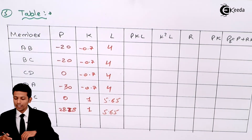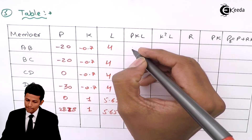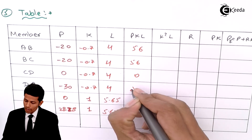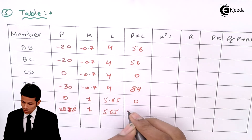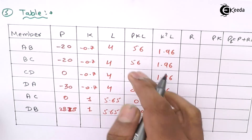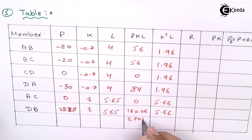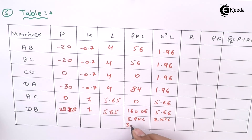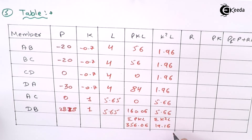Computing the PKL column: multiply P, K, and L for each member. The summation of PKL comes to 356.06. The summation of K-squared times L comes to 19.16.